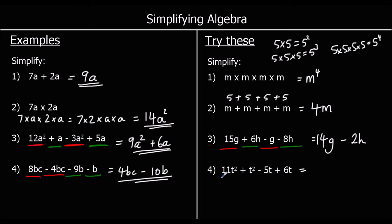And we've got T squared terms and T terms in the last question. 11T squareds plus 1T squared makes 12T squared. And we've got negative 5T plus 6T. Negative 5 plus 6 is 1. So we've got 1T. We don't write 1T. We just write T. T means 1T.